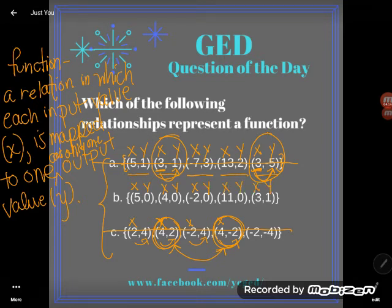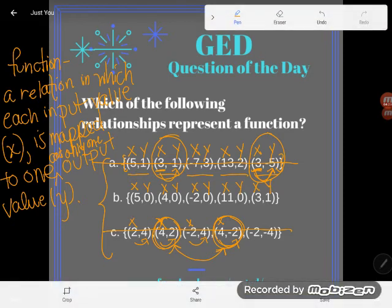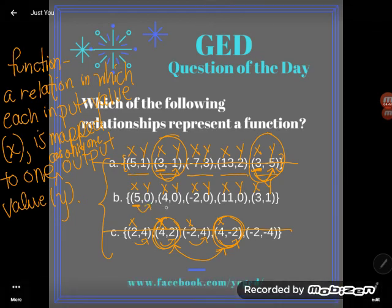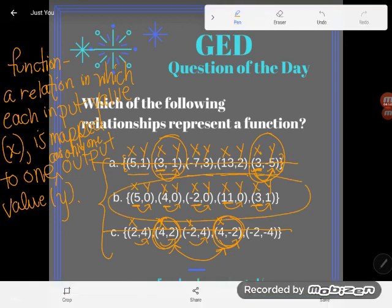Now a lot of students try to tell me that this one isn't a function either because they see all these repeating y's. But functions, kind of like life, are a little bit of a double standard. It's only the x's that have to remain faithful. Nobody cares about the y. So take a look - I only see 5 ever mapped to 0, same thing with 4. It's only mapped to 0. So see how none of these x values repeat? Yeah, I've got a function here. The correct answer is b.